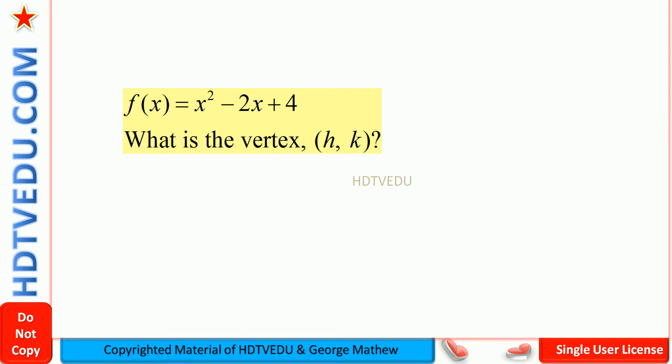F of x equals x to the power of 2 minus 2x plus 4. This is a quadratic function. What is the vertex, h k?